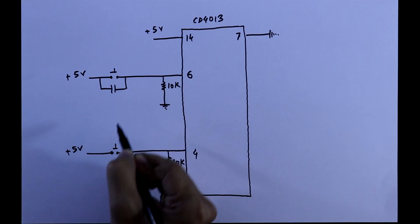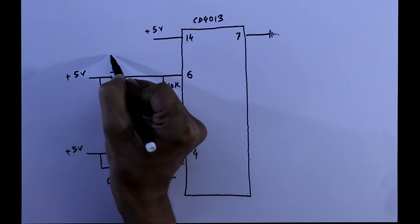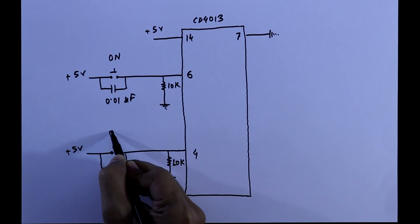And for debouncing we have to connect a ceramic capacitor. This switch is for ON and this is for OFF.